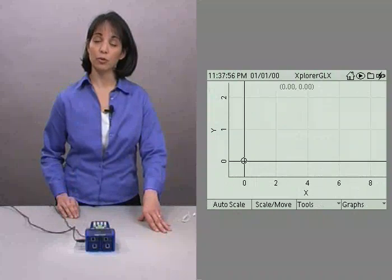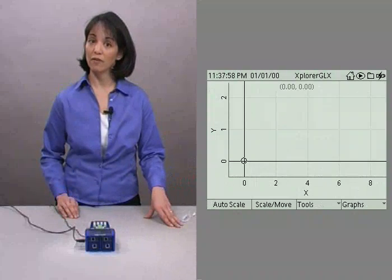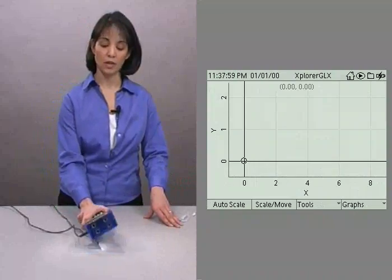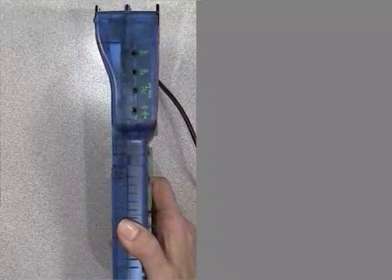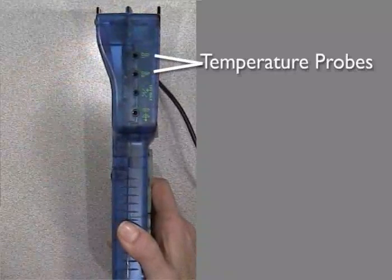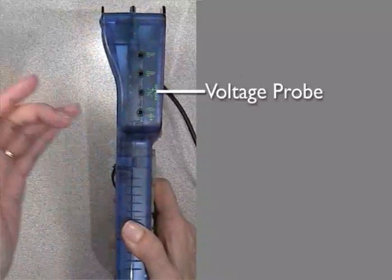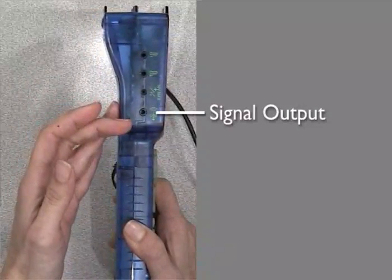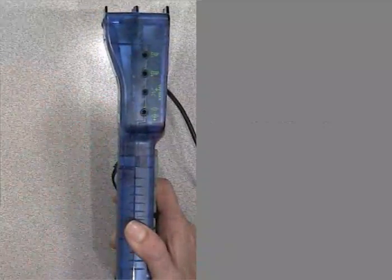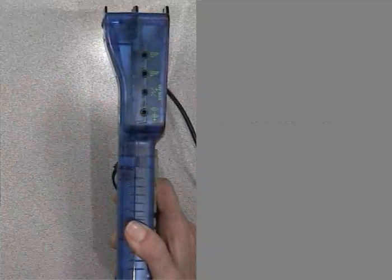Now we're ready to plug in a temperature probe into the left side of the Explorer GLX. You see here that there are four ports. The first two are for the temperature probes. The third one is for your voltage probe and the last one is for a sound signal output. So go ahead and plug the temperature probe into either of the first two ports.